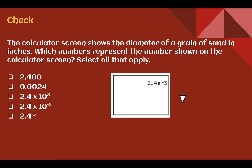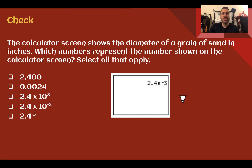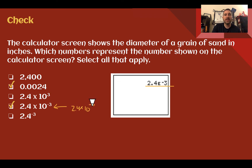Check your understanding: the calculator screen shows the diameter of a grain of sand in inches — which numbers represent the number on the calculator screen? Select all that apply. You should have said the second one, 0.0024, and the fourth one, 2.4 times 10 to the negative 3. The fourth one is exactly what it shows: factor 2.4, the e is times 10, and negative 3 is our exponent. Changing to standard form we move 3 places left: giving us 0.0024.